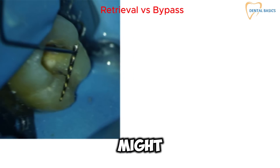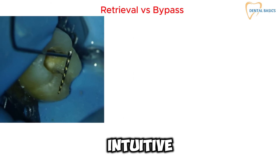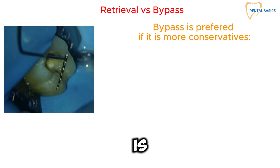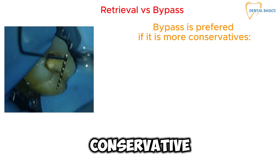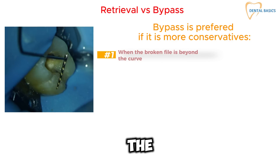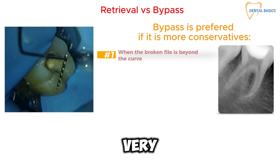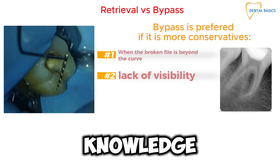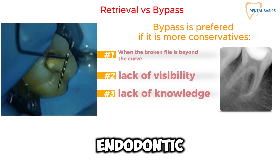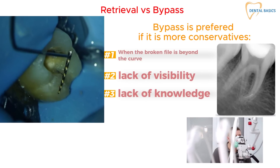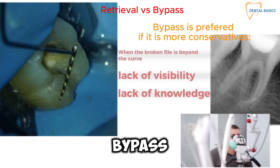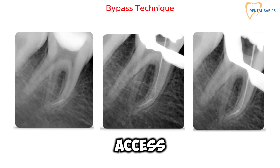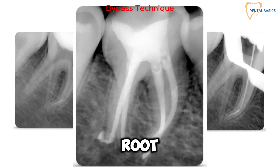While retrieval might seem like the intuitive approach, bypass is sometimes the preferred method if it is more conservative — particularly when the broken file is beyond the curve, in which case retrieval will be very aggressive. Lack of visibility, knowledge, and instruments to retrieve the file also favor the bypass technique, which involves carefully maneuvering around a fractured instrument to access and treat the root canal apex.